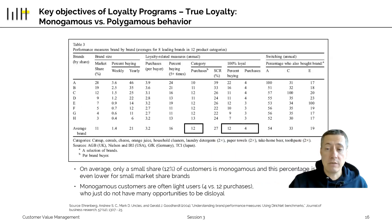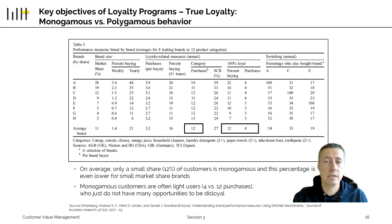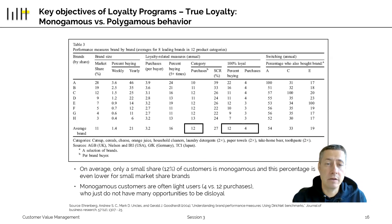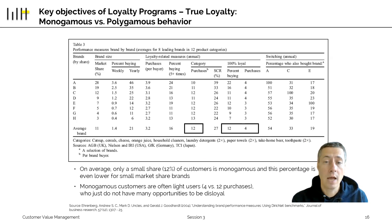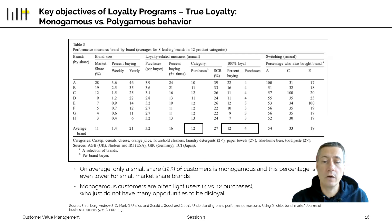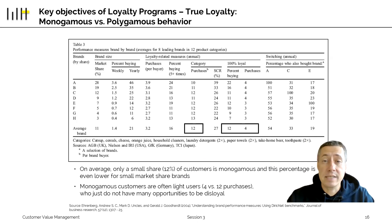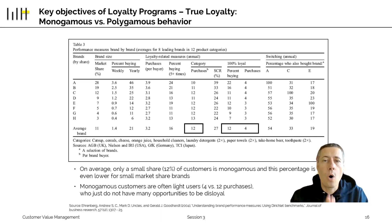On top of that, there's the question of whether true loyalty even exists. There is a very famous research group led by Andrew Ehrenberg that studied how people buy across many different brands in many different industries. They found two things: first, there is a group of 100% loyal customers, but it is small — in the example shown here it's about 12%, or roughly 10%, meaning one in ten customers is 100% loyal and always buys your brand when purchasing in that product category.